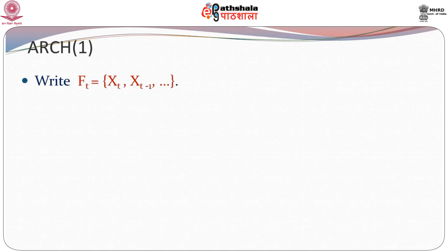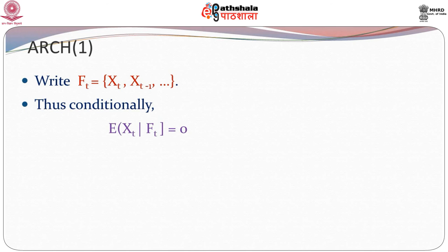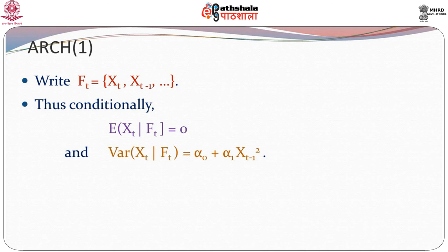Let us define F_t as the present and past values of x — that is, F_t is the set of x_t, x_{t-1}, x_{t-2}, and all recent and remote past values. Conditionally, the expectation of x_t given F_t equals 0, because the past values are given and the expectation depends on epsilon_t which has mean 0. The conditional variance depends on the past value x_{t-1}, and since it is given, the variance comes out to be sigma_t squared, which equals alpha_0 plus alpha_1 times x_{t-1} squared.